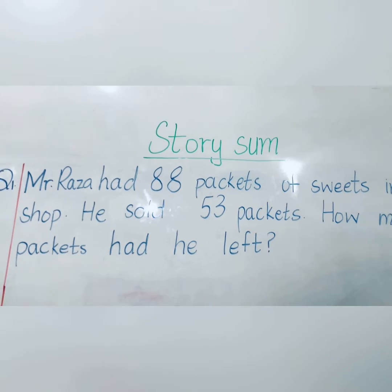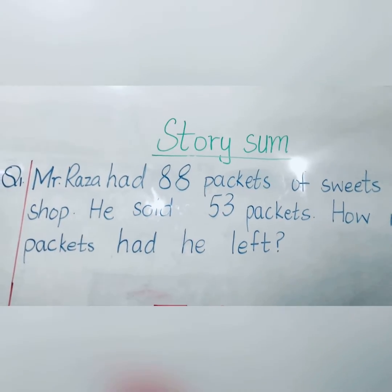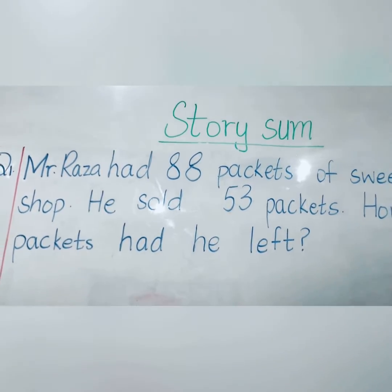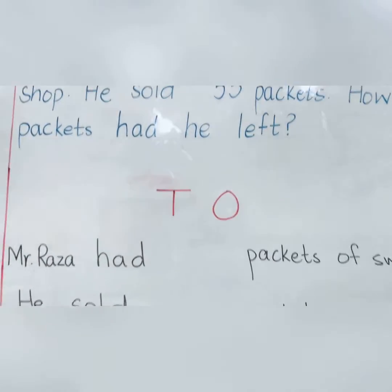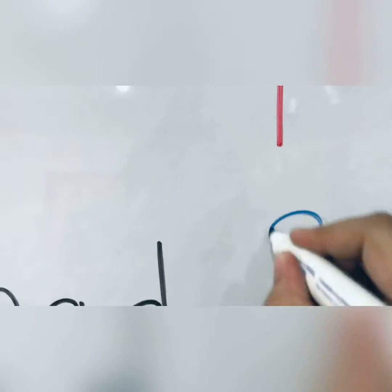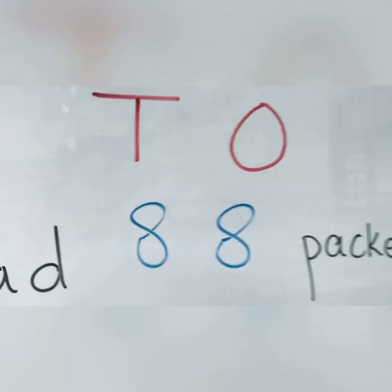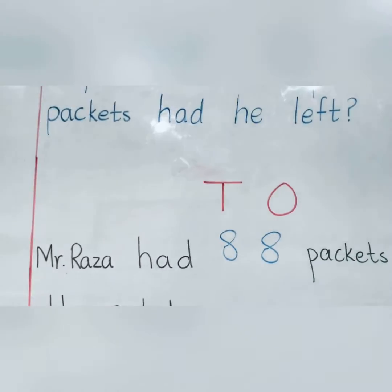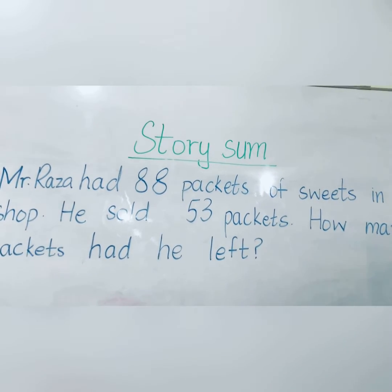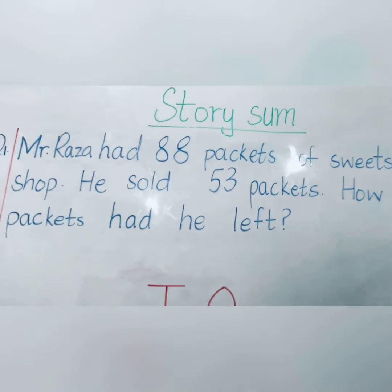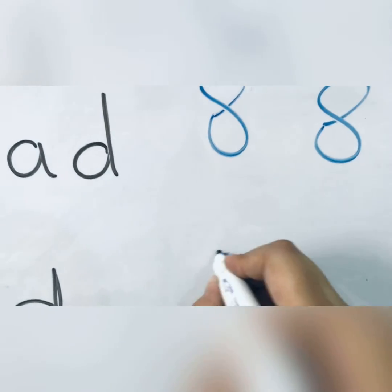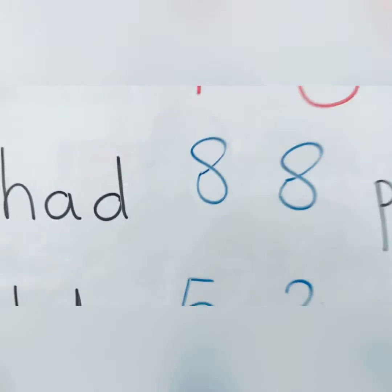First you will understand the question, and the second thing is you will write the statements. Let's see the first part of the story: Mr. Raza had 88 packets. So that is the first statement — Mr. Raza had 88 packets of sweets. Next part: he sold 53 packets. So that will be our statement number two — he sold 53 packets.